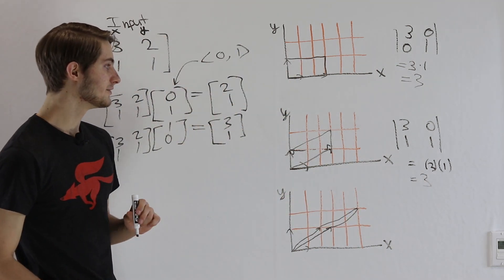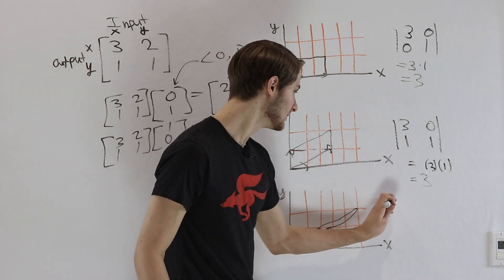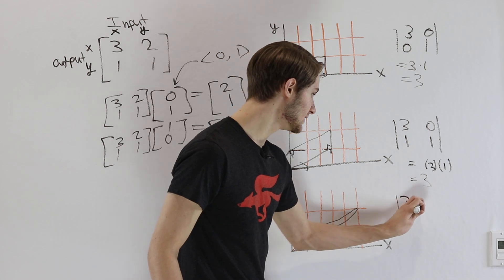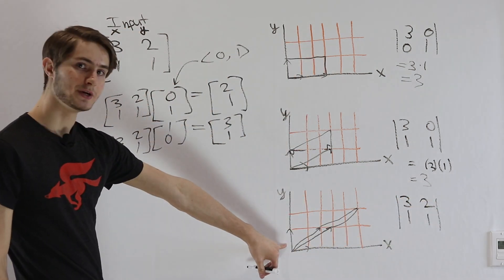Now we have to have that final component that we've been ignoring this whole time. What is the determinant of [3, 2, 1, 1]? That's the graph that we have right here.